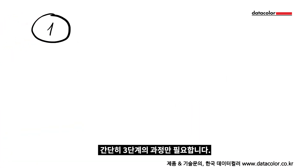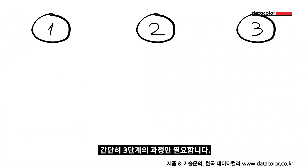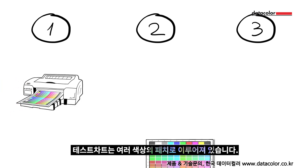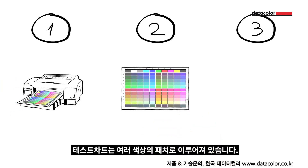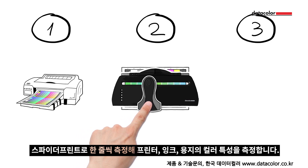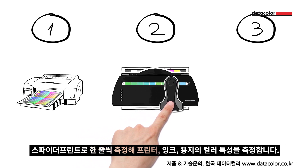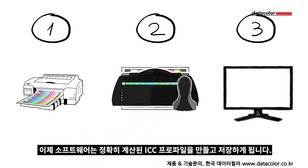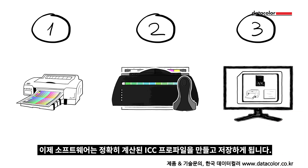Here's how to do it in three easy steps. Use the Spider Print software to print a test chart containing different colour patches on the paper you would like to use. The Spider Print calibrator measures each row of patches and records the printer, ink and paper's colour characteristics. The software then calculates a corrected ICC profile and stores it automatically in the right place on your computer.